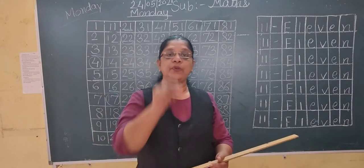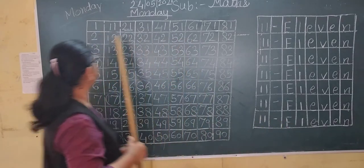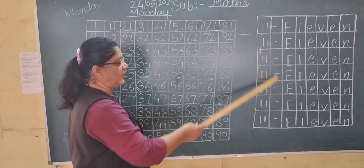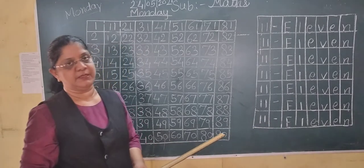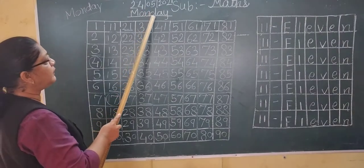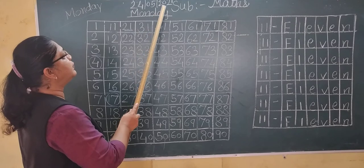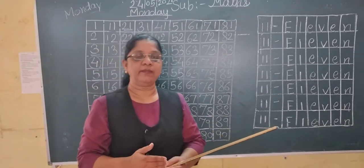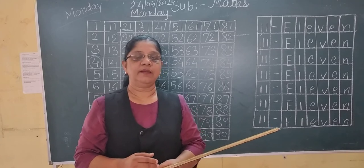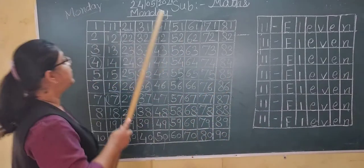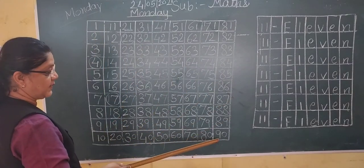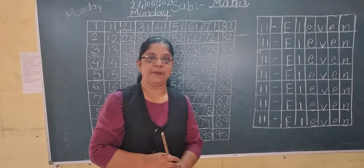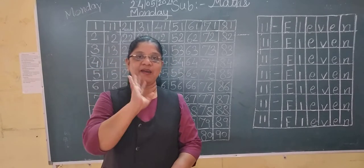Like that only, you write a full page of eleven numbers. First, you write 1 to 90 numbers in your math notebook. On another page, you write the number eleven spelling — full page. But first you mention the date: day 24, 4, 2021. And the day: M-O-N-D-A-Y, Monday. Mention date and day, then write 1 to 90 numbers, and on the second page write the eleven number spelling full page. Okay? Understood, students? Bye. Have a nice day.